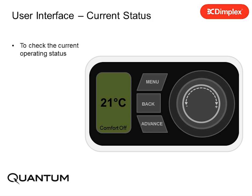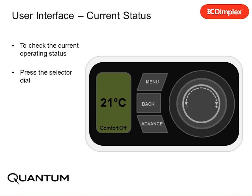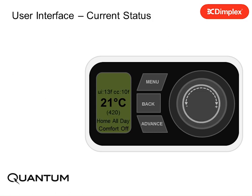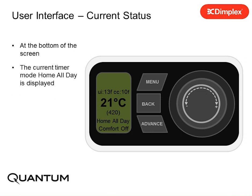To check the current operating status, press the selector dial. At the bottom of the screen, the current timer mode, home all day, is displayed. The current comfort status is also displayed.